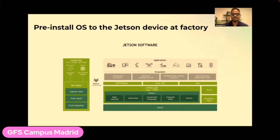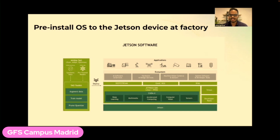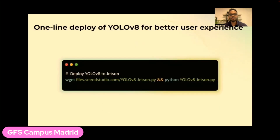Talking about the pre-install of Jetson devices at factory — normally the Jetson device comes with the JetPack OS, which consists of different tools needed for computer vision applications such as DeepStream, Riva for speech AI, ROS for robotics, and different libraries. All come bundled in one system called JetPack, which takes care of all the necessary tools to run these AI pipelines.